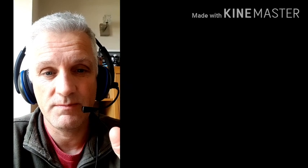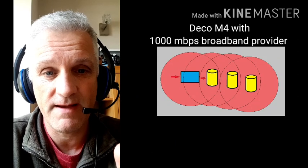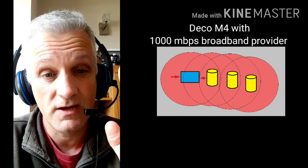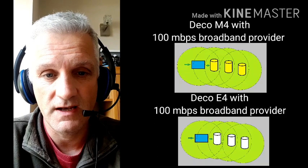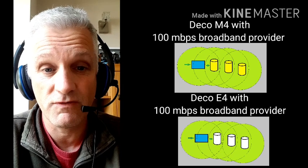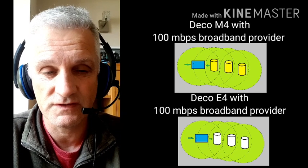What does all this mean? All this means that if you have got a gigabit, one gigabit broadband provider, go for the M4. If you haven't got a one gigabit broadband provider you can go for either, and if you go for the E4 and then you later do decide to upgrade your broadband provider, you could then purchase a single M4 unit.